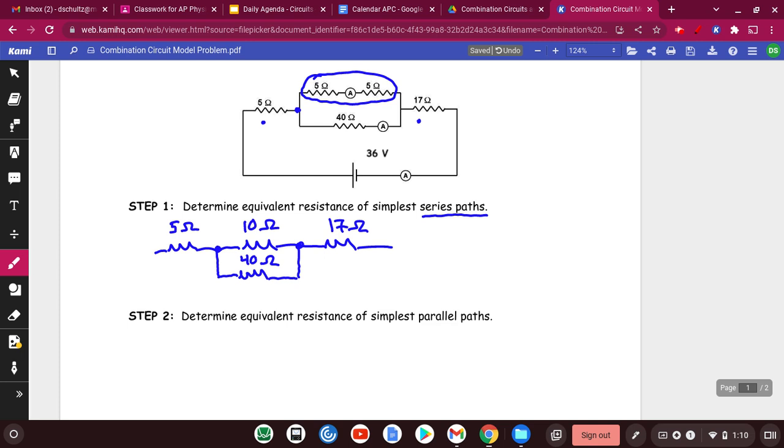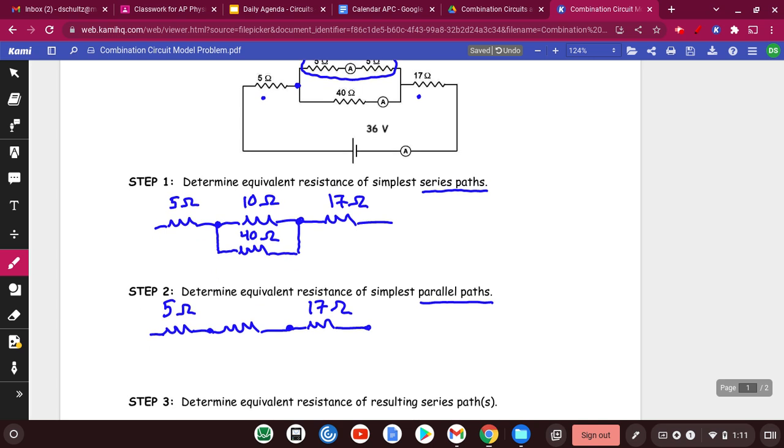So step 2 is now we're going to go on the hunt for things that are in parallel, and I hope you can see that the 10 and the 40 are in parallel. So we're going to have to combine those up. I'm going to keep that 5 ohm out in front. This is going to be the mystery resistor.